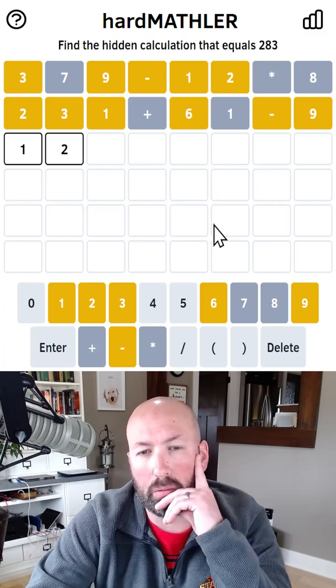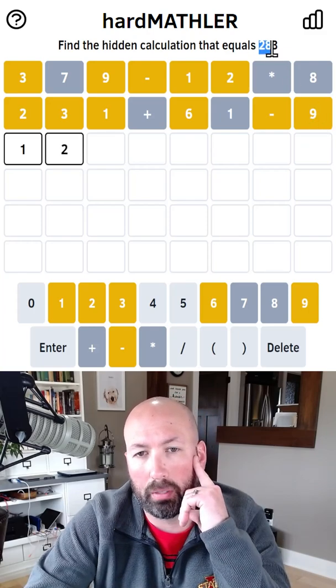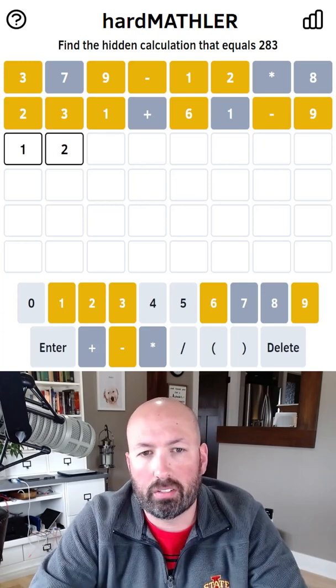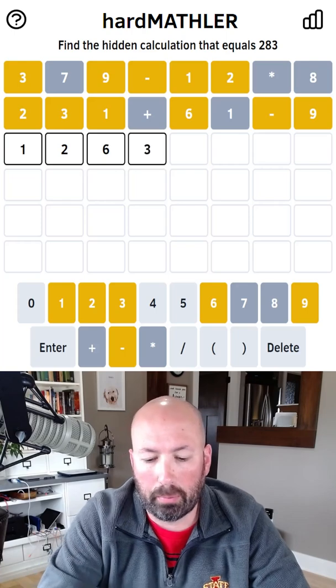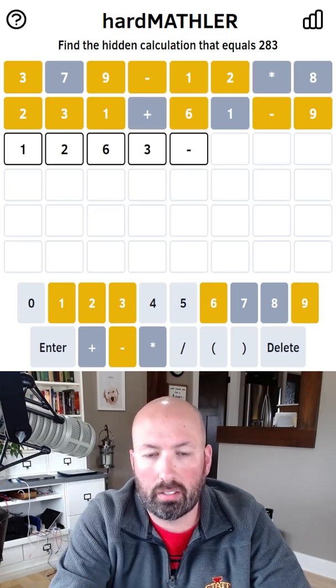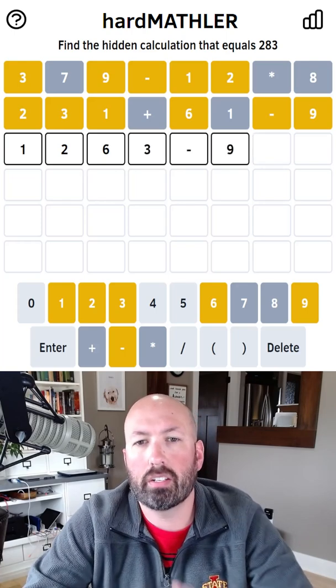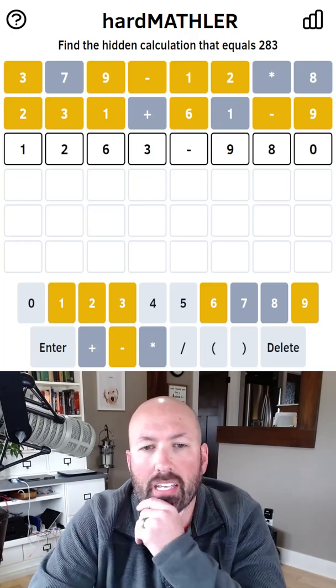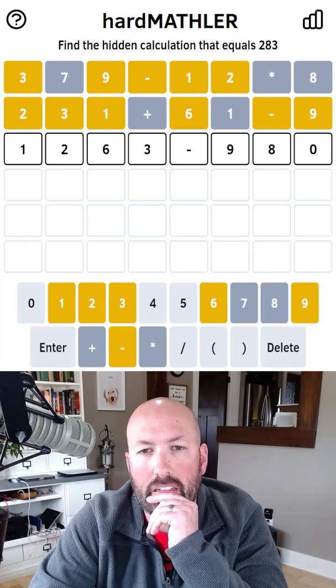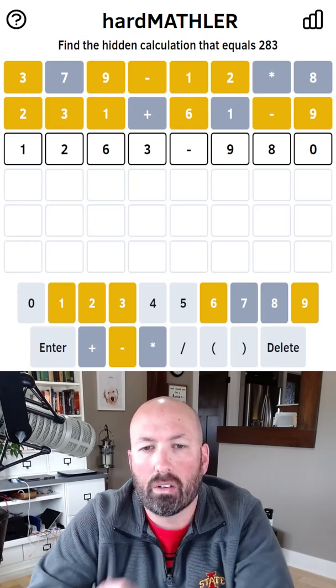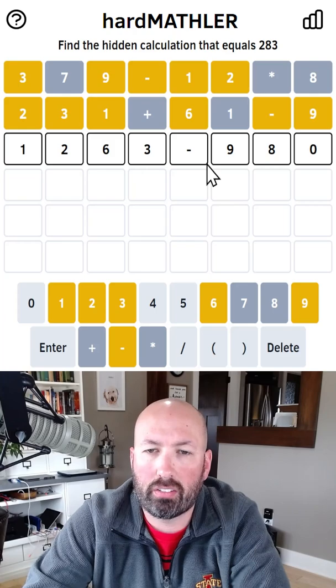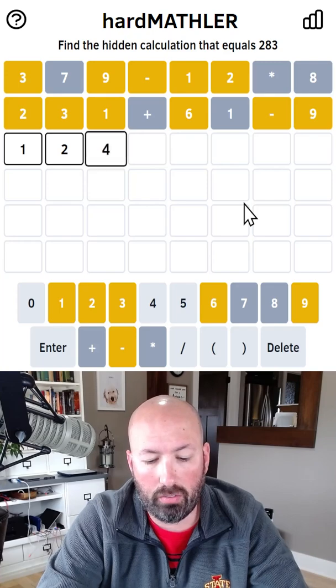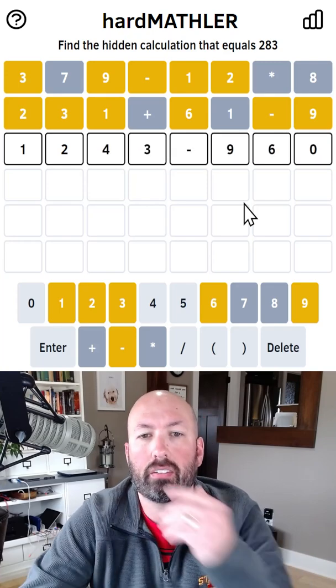So 12, you know, 63, for example, minus 900, 980, but we don't have an eight. So we can't do 63. What if we subtract 960? That would be 1243. Let's try that. 1243 minus 960. We have a one, a two, a three. We haven't checked four yet.